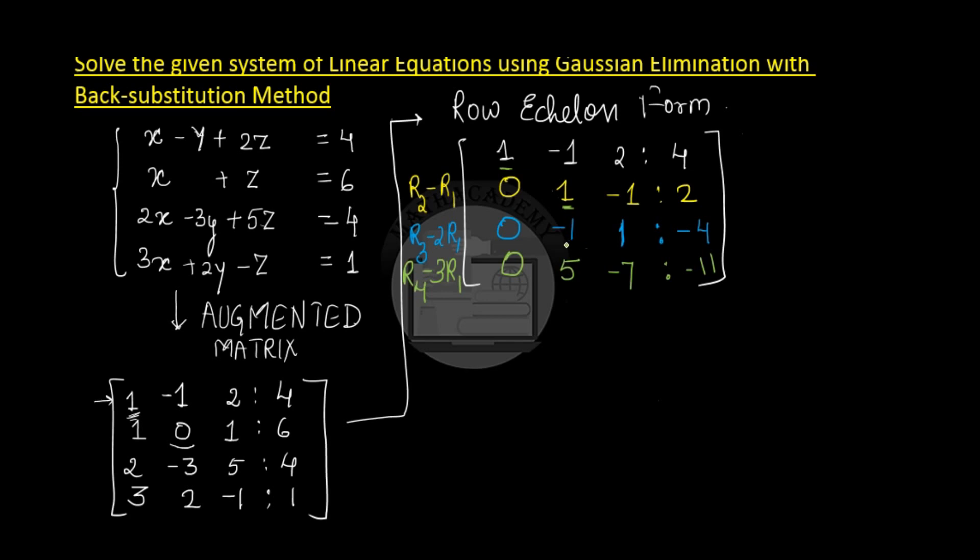For the third row, we want this particular element to be 0, and it will be obtained by adding row 3 to row 2. So the matrix: 1, minus 1, 2, 4. Keep the first row as it is. Second remains as it is. And the third row is written as row 3 plus row 2.